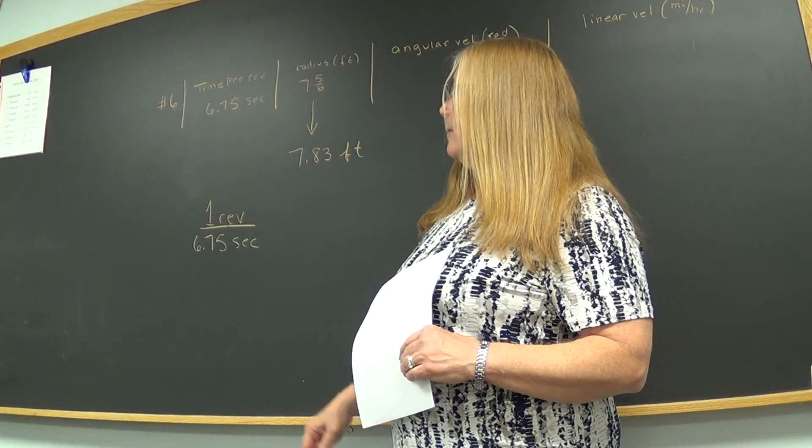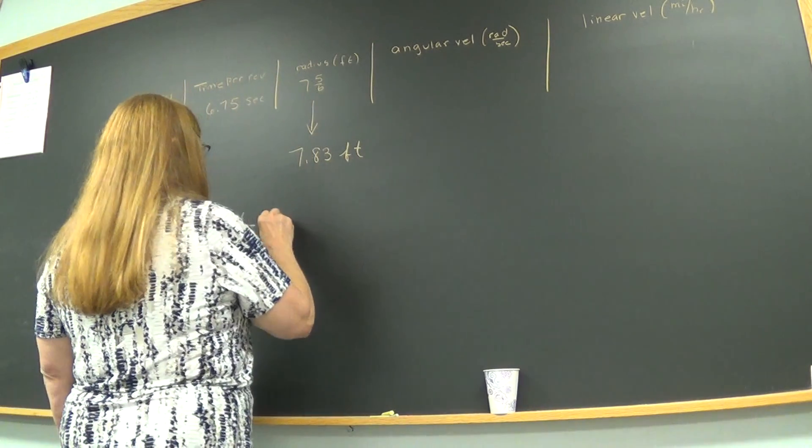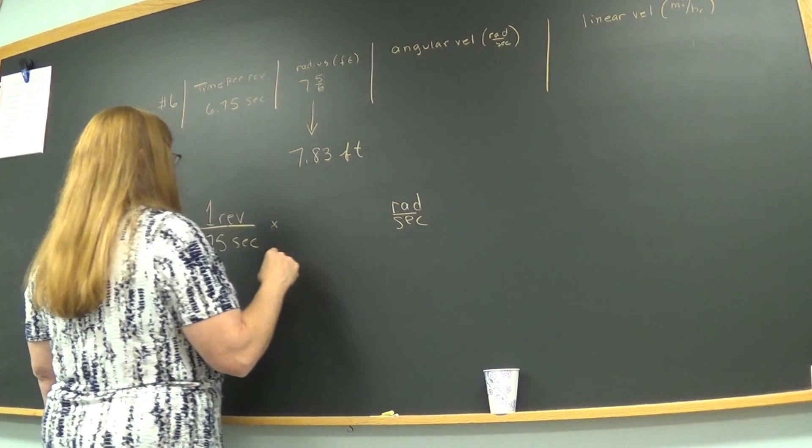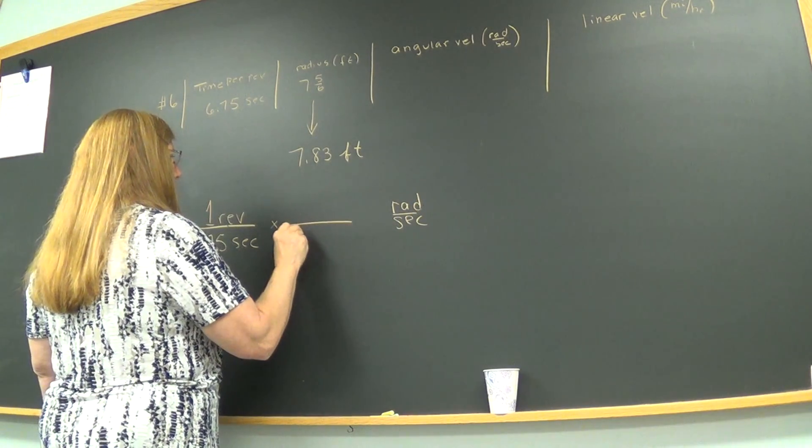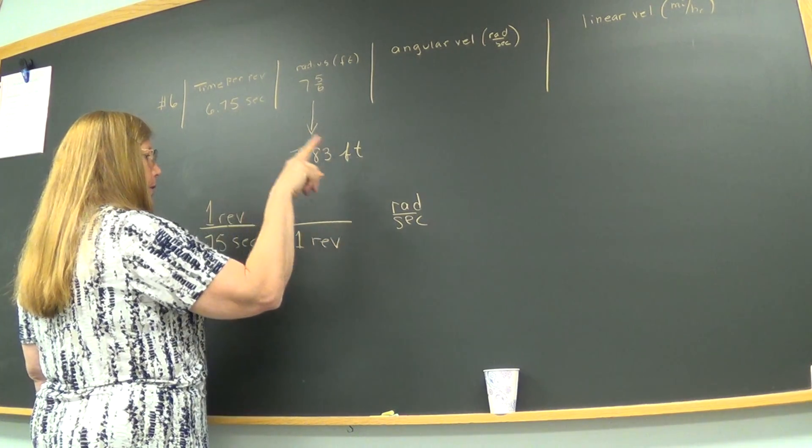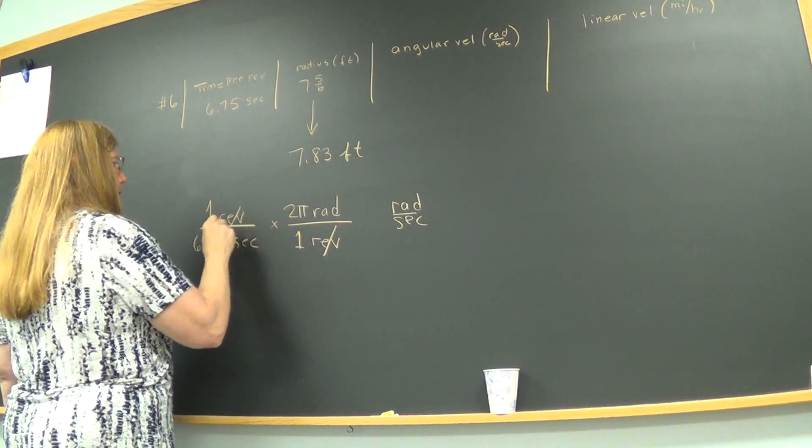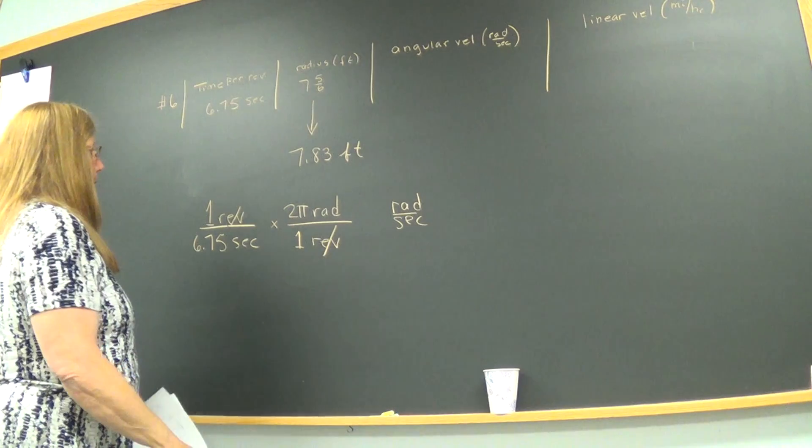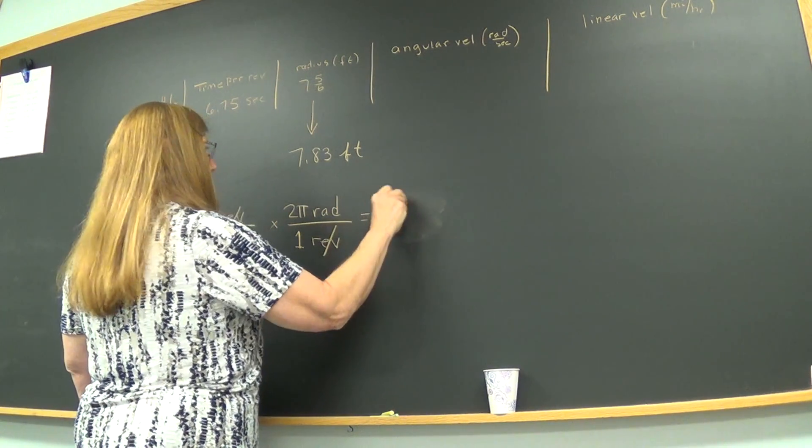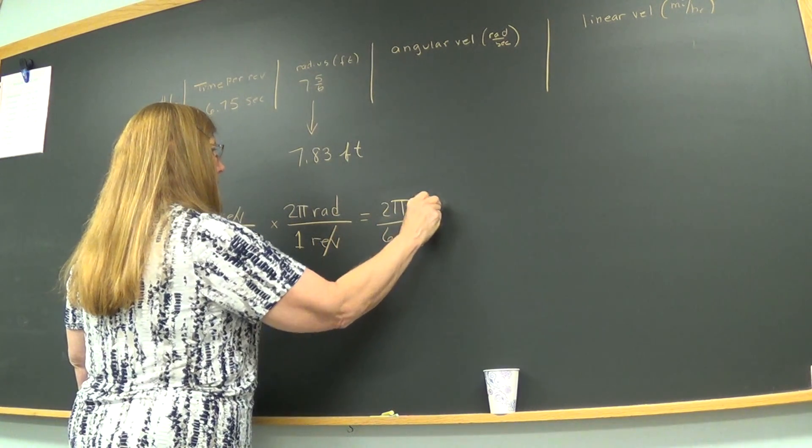This information, once around, one revolution took 6.75 seconds. That is an angular velocity but I asked you to give it to me in radians per second. So to get to radians per second I am going to remove revolutions by putting it in the denominator and I'm going to add radians. So one revolution is 2π radians. One revolution disappears and I end up with 2π over 6.75 and now I'm in radians per second.